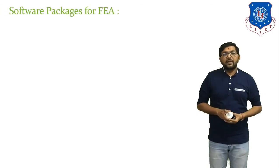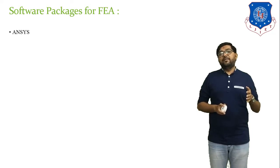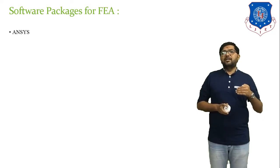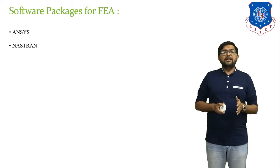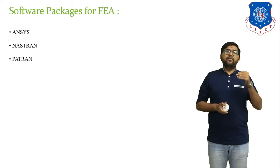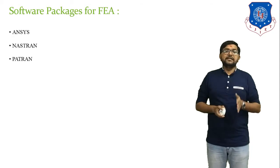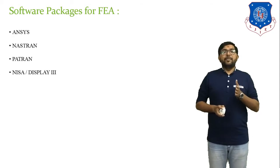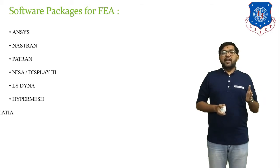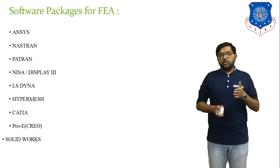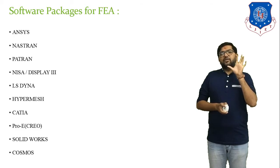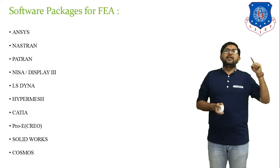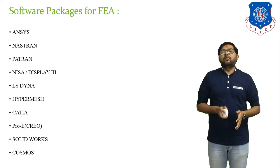Next we discuss software packages for FEA — how many software tools are available. First is ANSYS, which supports many types of analysis: structural analysis, vibration analysis, harmonic analysis, temperature analysis, fluid analysis, and all other types. Other software packages include Nastran, Patran, NISA or Display 3, LSDyna, Hypermesh, CATIA, ABAQUS, CREO, Solidworks, and Cosmos. All are analysis and design software. We need to learn two types of software: first, modeling software, and second, analysis software.